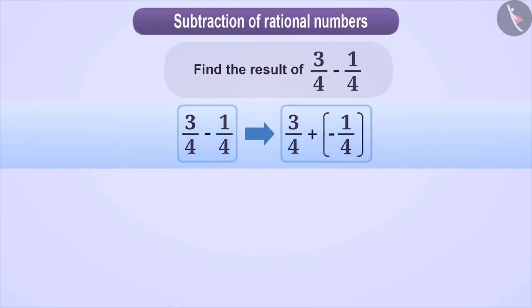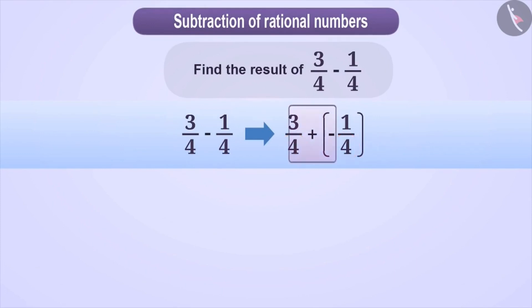After this step, we make the denominator of the rational numbers equal. Since the denominators are already equal, we ignore this step.